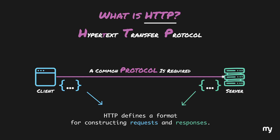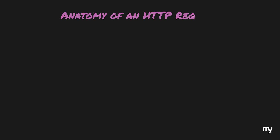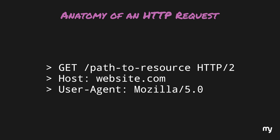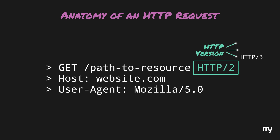To understand this a bit further, let's try to see what an HTTP request and response looks like. Each HTTP request contains an HTTP version. There are different versions of HTTP and the latest one is HTTP 3. Although this is the latest one, not a lot of systems have adapted to it. So the most common ones being used today are HTTP 2 and HTTP 1.1.